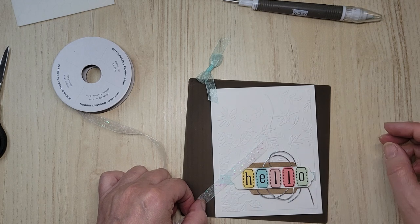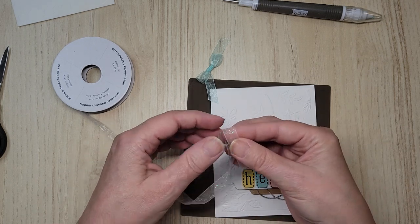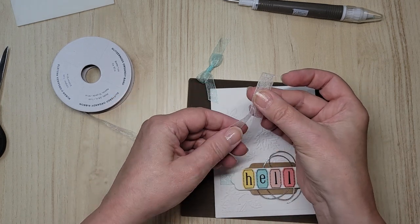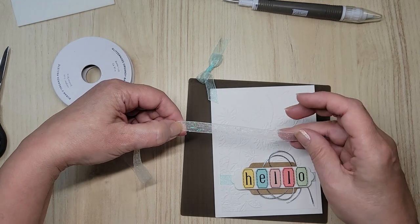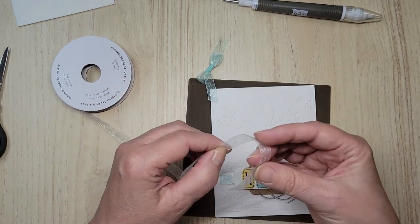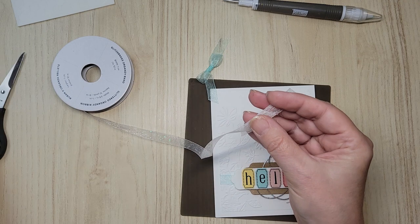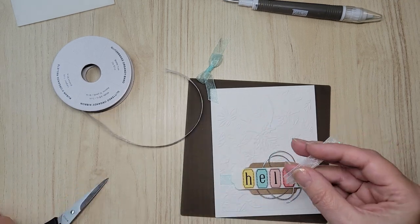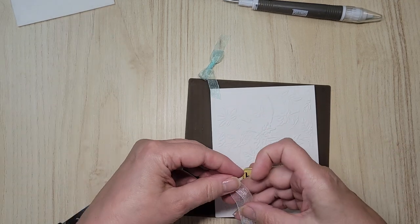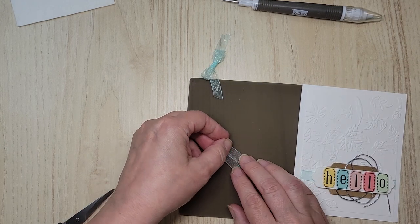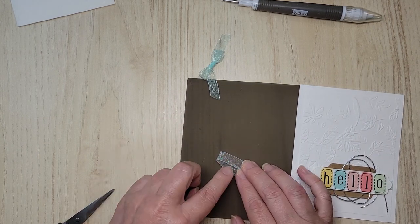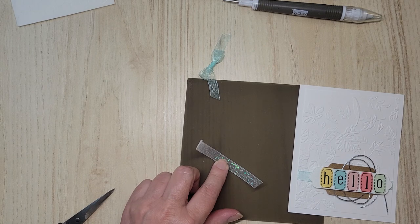But on its own, it doesn't really show up super well on the card. So I'm just going to fold it in half. That's probably about four inches. I'm just going to fold that in half. Cut a tail. And then bring in the glue dots again.